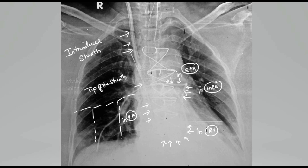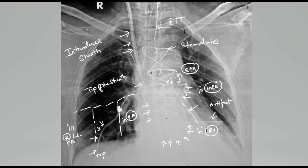The PA catheter should not cross the junction between the medial and middle third of the lower lung zone. In this case, it has crossed this junction and the tip is lying in the right lower lobe pulmonary artery branch. This mandates withdrawal of the catheter to a more proximal position, as balloon inflation in this position can cause injury to the branch pulmonary artery. One can also note other markings in this chest X-ray.